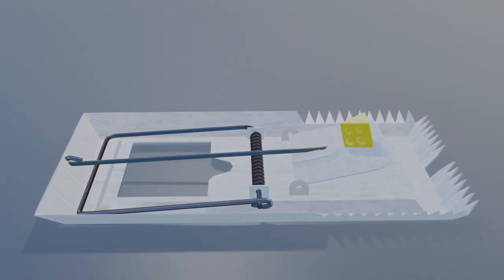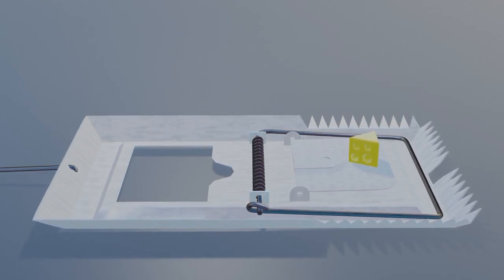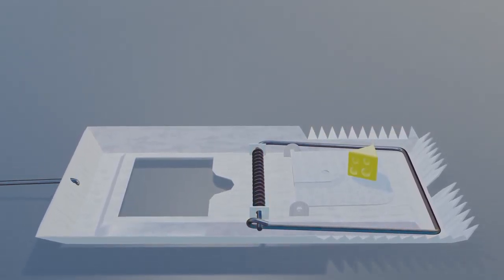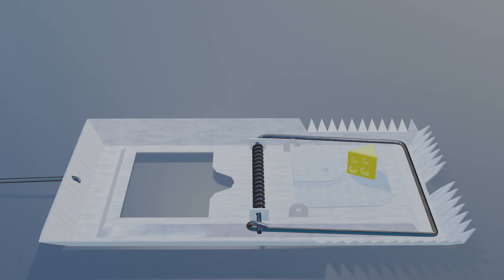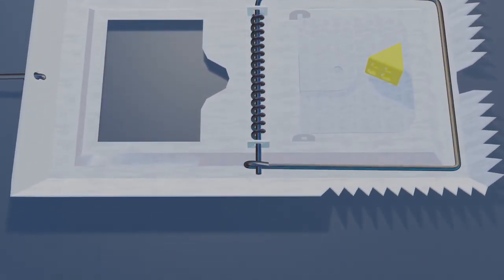Once the rat touches the cheese, the catch is removed from the holding bar, converting the potential energy in the spring into kinetic energy. The hammer rushes to the other side, trapping the mouse before he has time to escape.